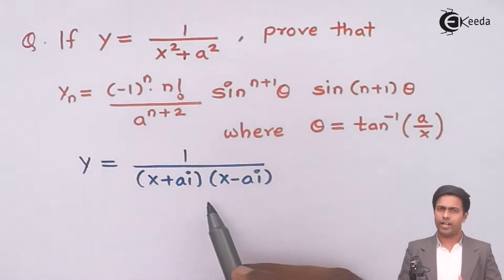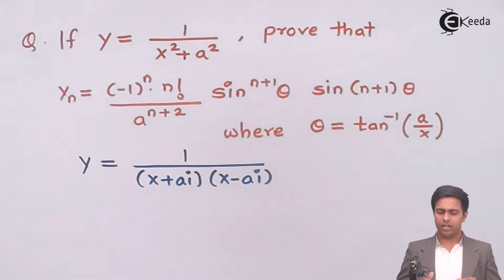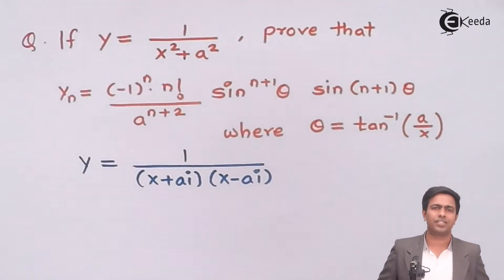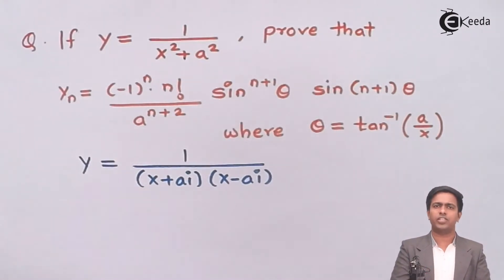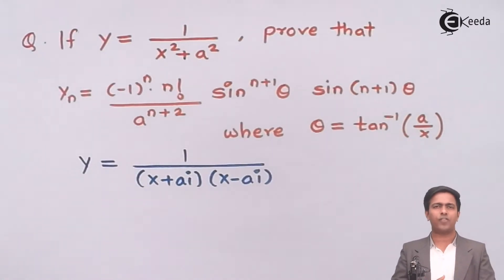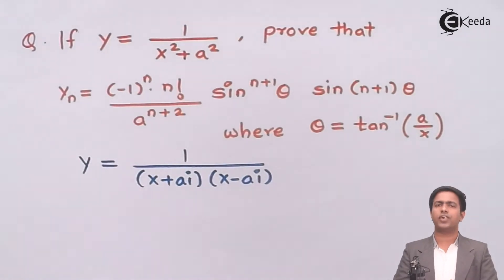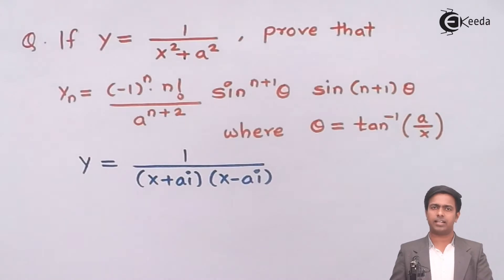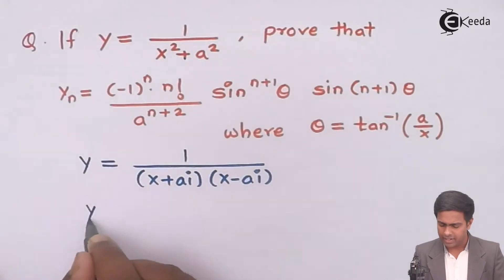Again to find out the nth derivative you have to separate these two terms. To separate two linear terms we generally use partial fractions. We can separate these terms by using the partial fraction, but if you want to save your time I will tell you one more method — a shortcut using trial and error. So what I will do is directly find out the partial fraction of this function to save time.